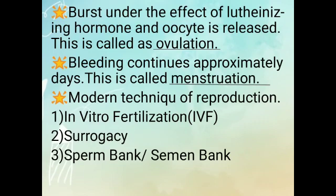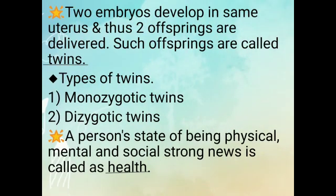Modern techniques of reproduction. First: In Vitro Fertilization (IVF). Second: Surrogacy. Third: Sperm Bank or Semen Bank. Two embryos develop in the same uterus and thus two offspring are delivered — such offspring are called twins.